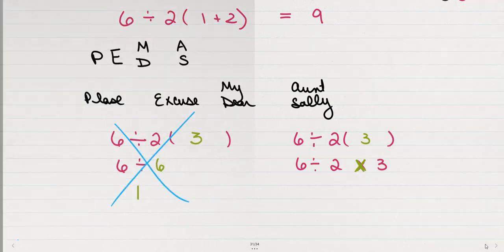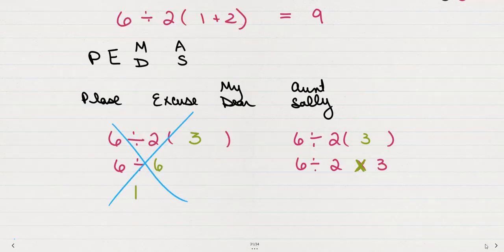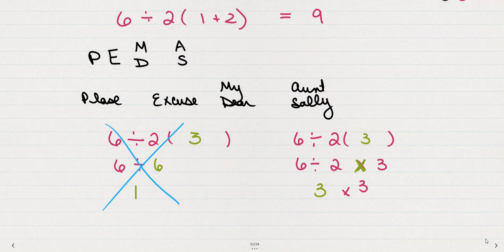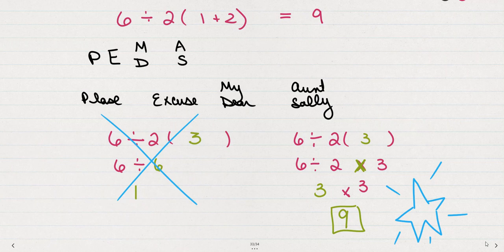You might see it 6 divided by 2 times 3. We're going to actually do this dividing first. I know that seems really weird because we don't see this type of problem enough. But 6 divided by 2 is 3, and then 3 times 3 is, of course, 9, and that is the answer to this question.